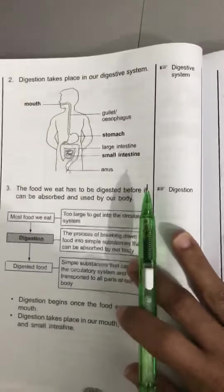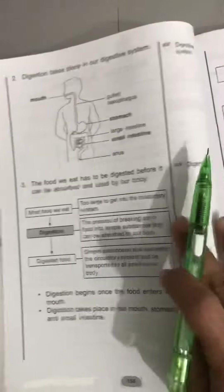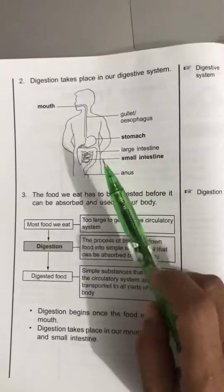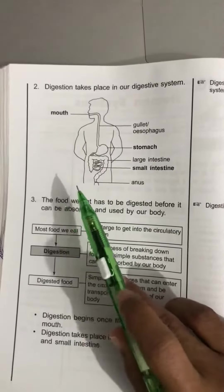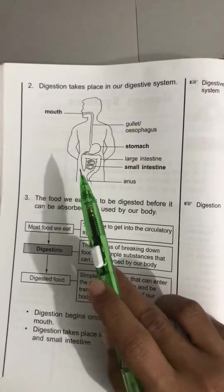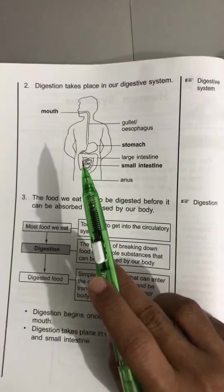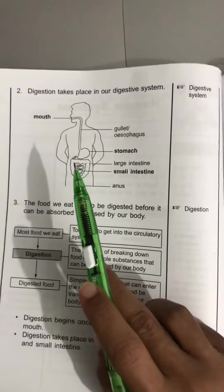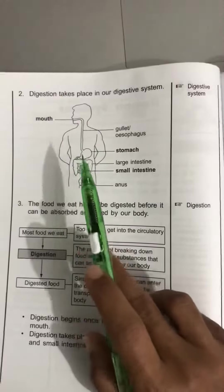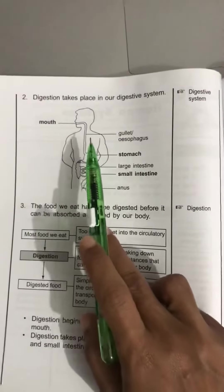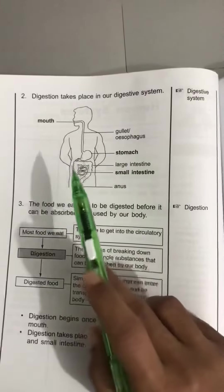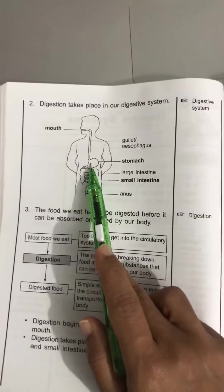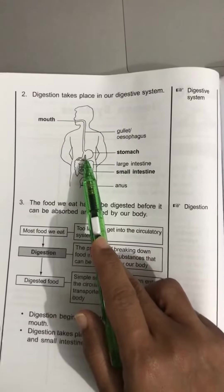Next, this is the diagram of the digestive system. The parts of the digestive system include the mouth, where we chew and break down food into smaller pieces, and then food is sent to the stomach through the gullet or esophagus.